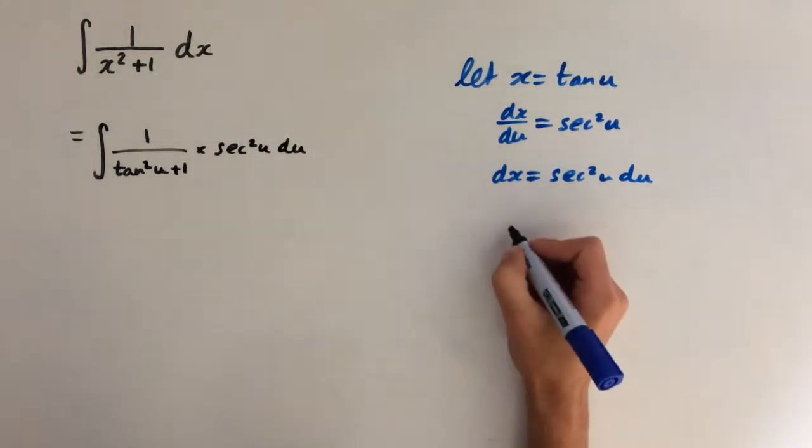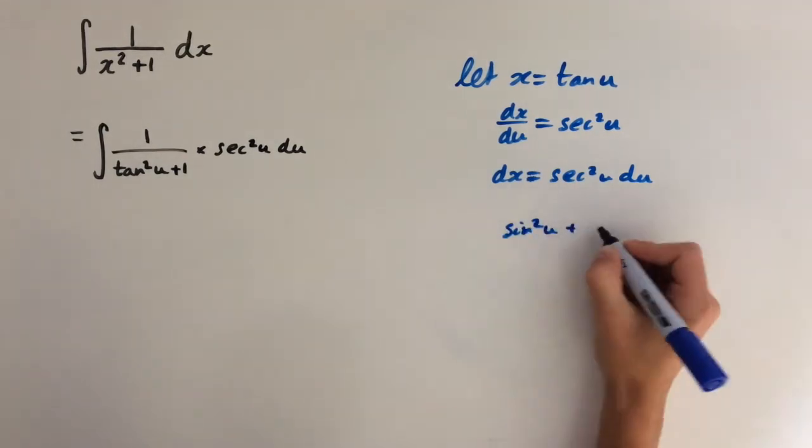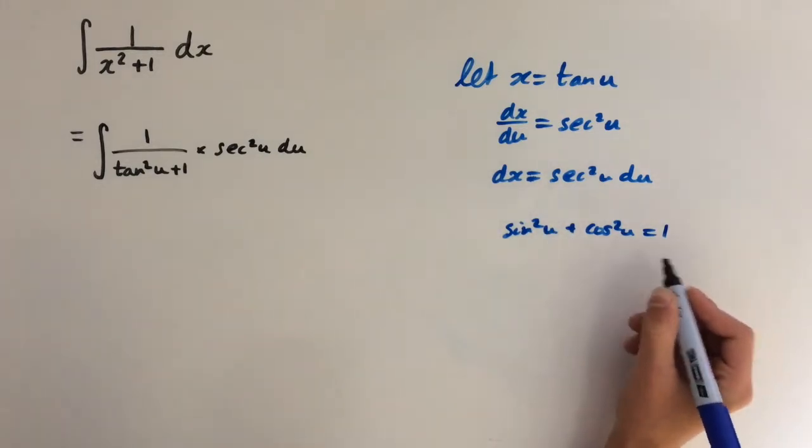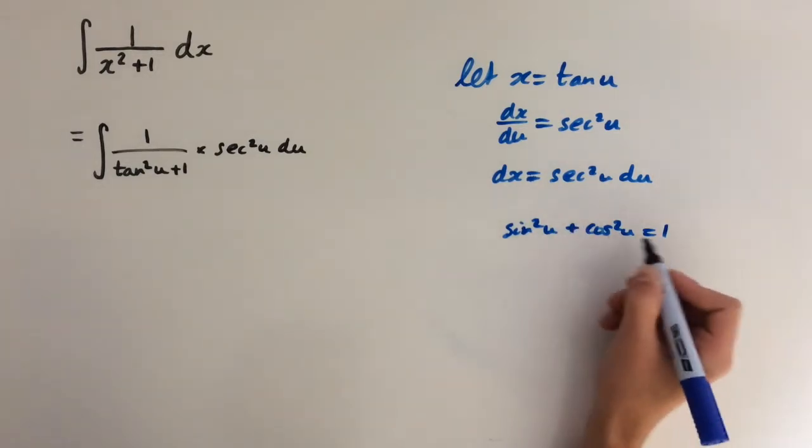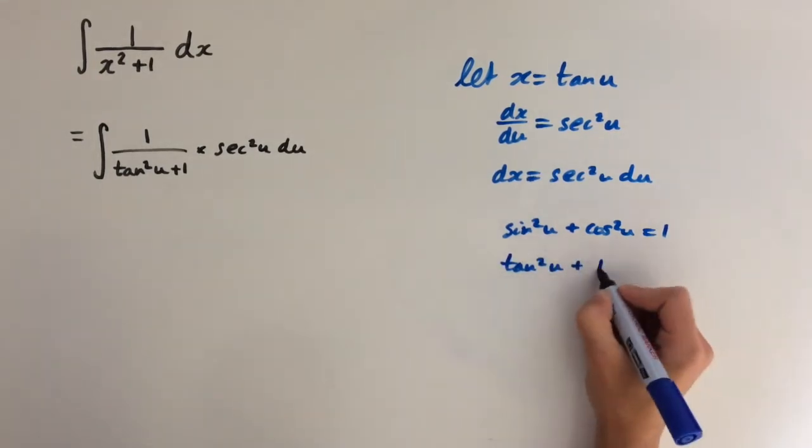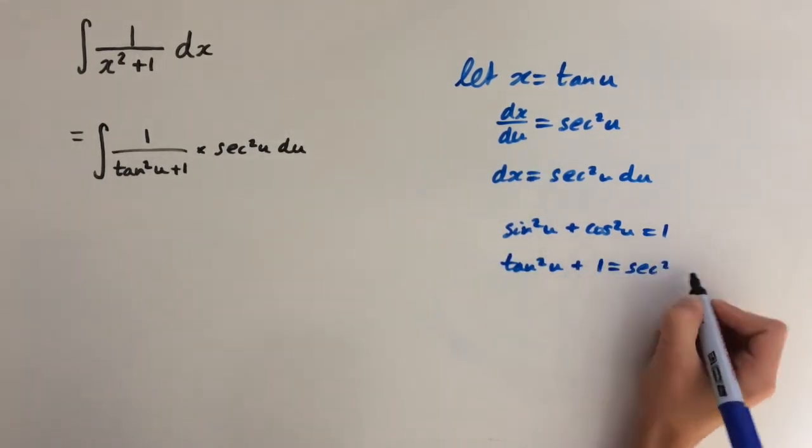Now let's look at the identity sine squared of u plus cosine squared of u equals 1. If we divide every single term here by cosine squared of u, we're gonna get tan squared of u plus 1 equals sec squared of u.